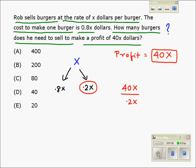As you see here, the numerator is the total profit, and the denominator is the profit of one burger.